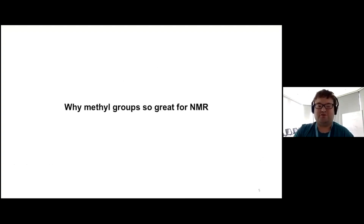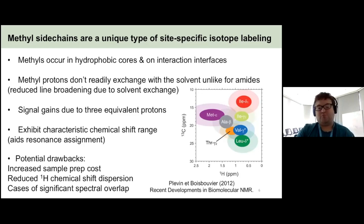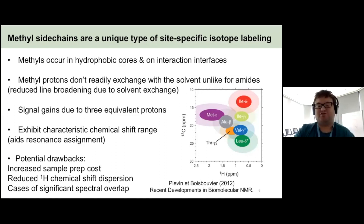Why are methyl groups so great for solution NMR? First, they occur in hydrophobic cores and on interaction surfaces, making them great for mechanistic studies. Methyl protons don't readily exchange with the solvent unlike amides, reducing line broadening from solvent exchange. The bulk magnetization is contributed to by three equivalent protons, which leads to signal gains. Methyls also exhibit characteristic chemical shift ranges, which aids in resonance assignment — different methyl types on different amino acids occupy very specific parts of your NMR spectra.